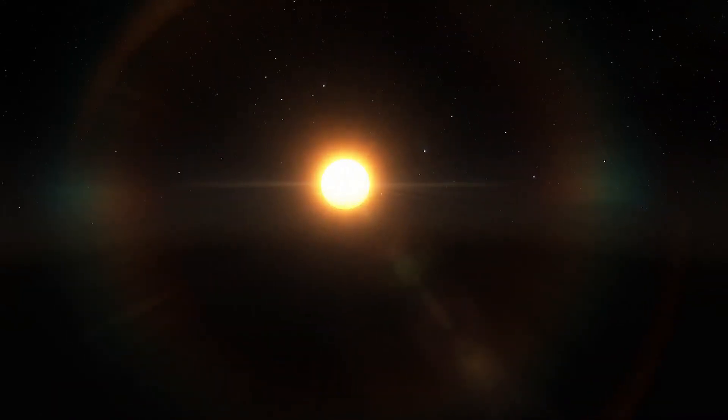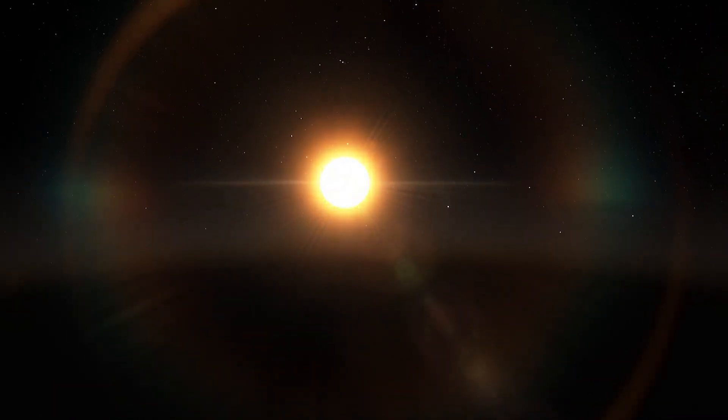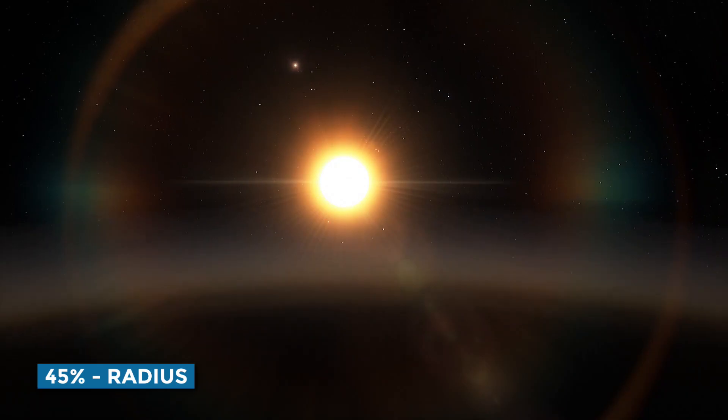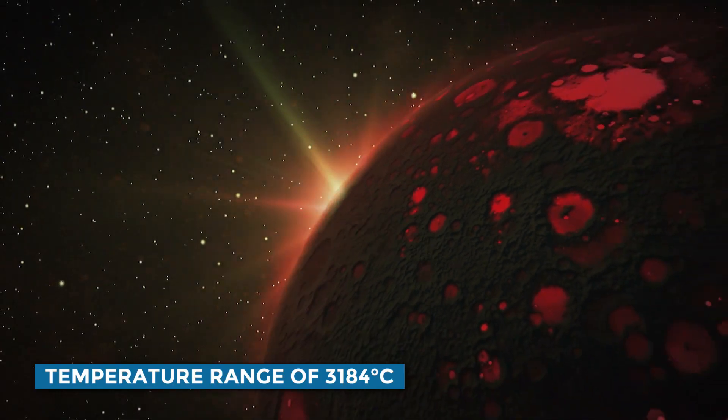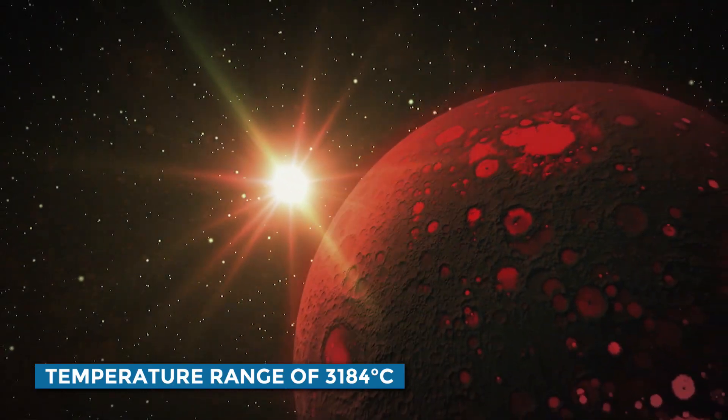The red dwarf is colder and relatively tiny than the Sun, with 45% of its radius and a temperature range of 3,184 degrees Celsius.